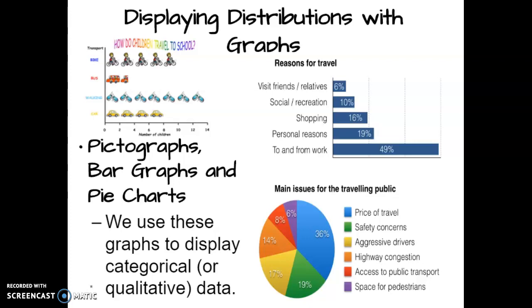In this bar graph you can see percents — for example, 16% of people travel to go shopping. That 16% is called a relative frequency. If instead it said '20 people said they travel for shopping,' that would be a frequency, or a count. So we have different types of bar graphs: relative frequency and frequency — it just depends on whether you're using counts or percents.